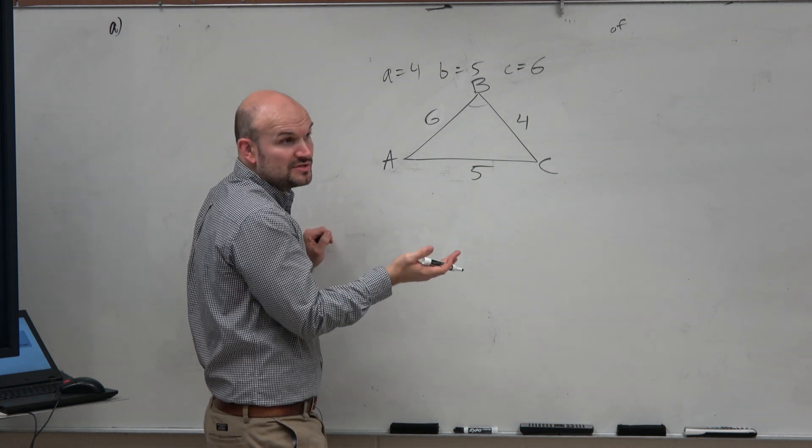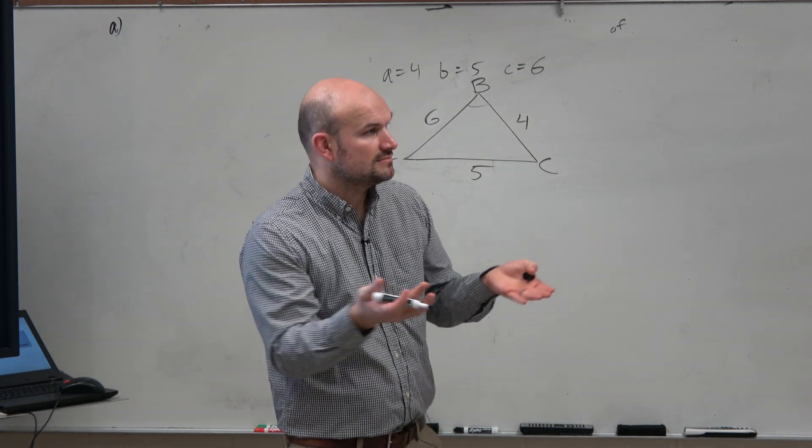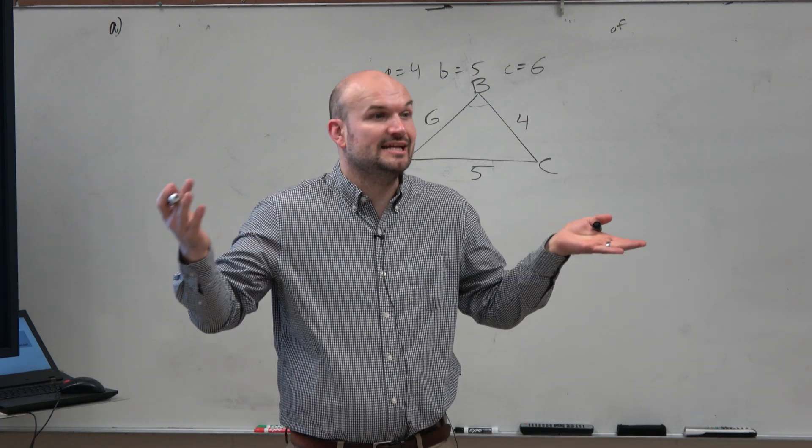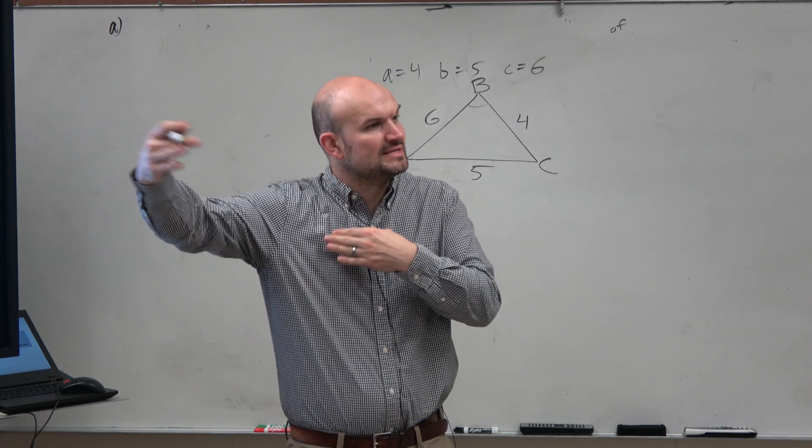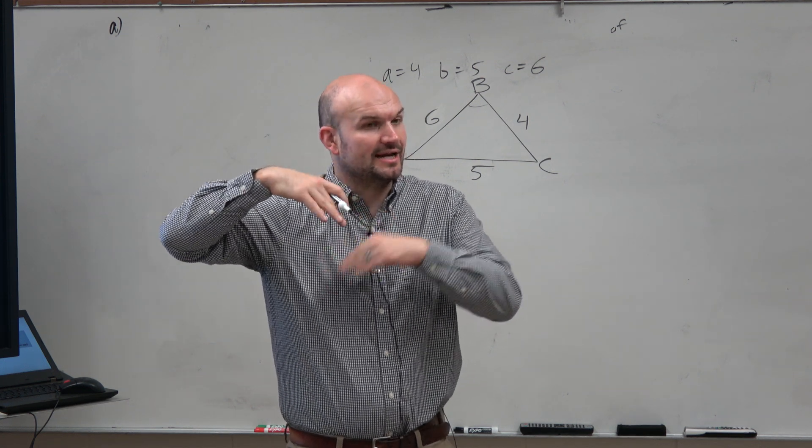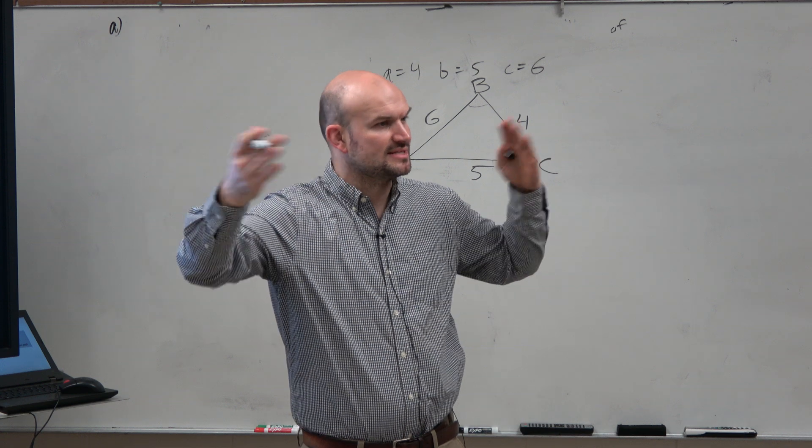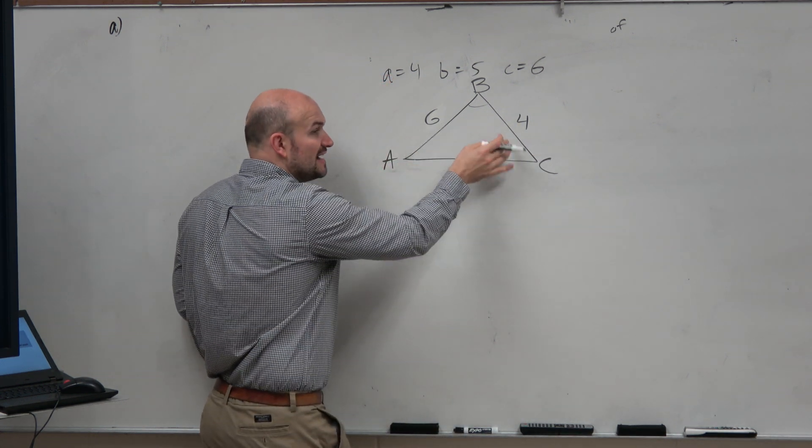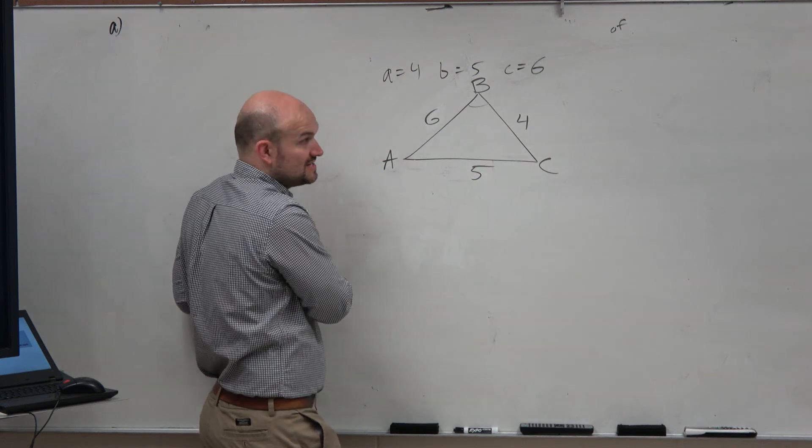If angle C is obtuse, then we know that it's, then we don't have to worry about the ambiguous case. Even if angle C is not obtuse, let's say it's 80 degrees, we know there's not an obtuse angle. Like we know there's not another, another angle can't be obtuse because that would be larger than 180. So when you have side, side, side, find the largest angle first, and then you can do the law of sines.